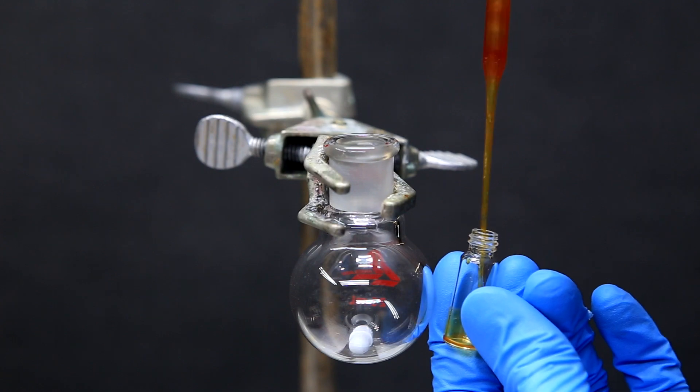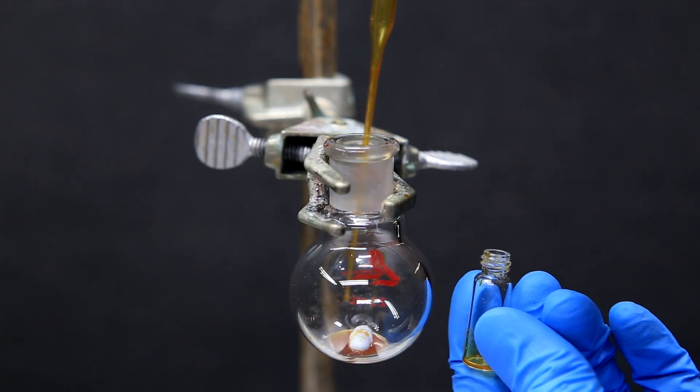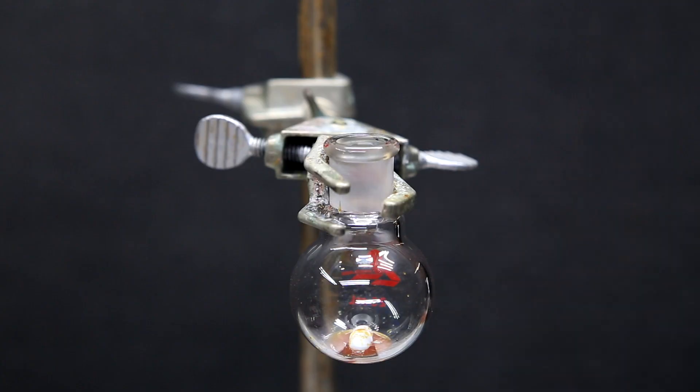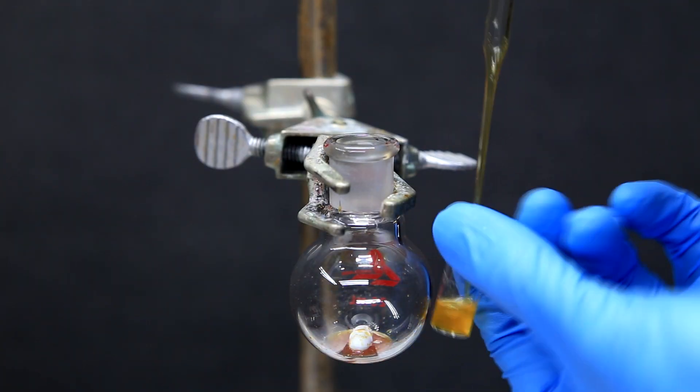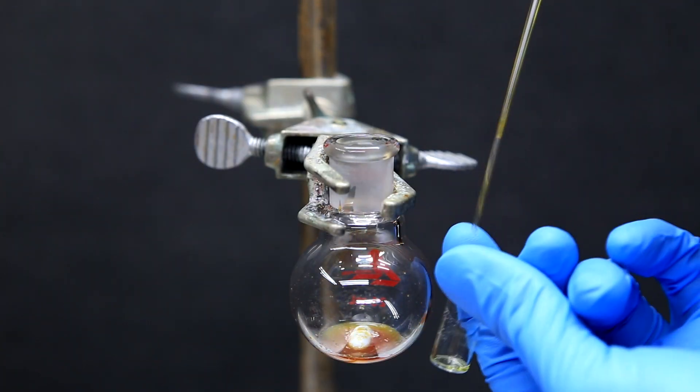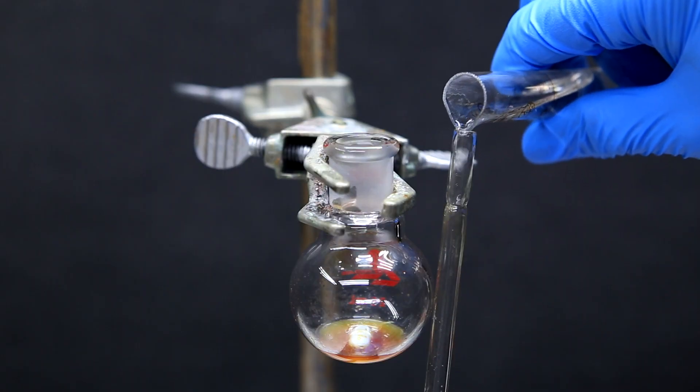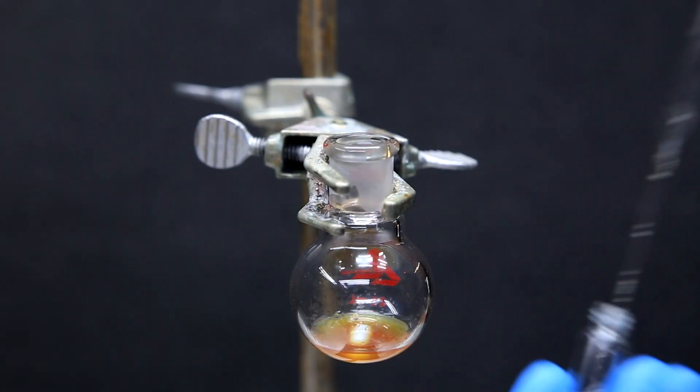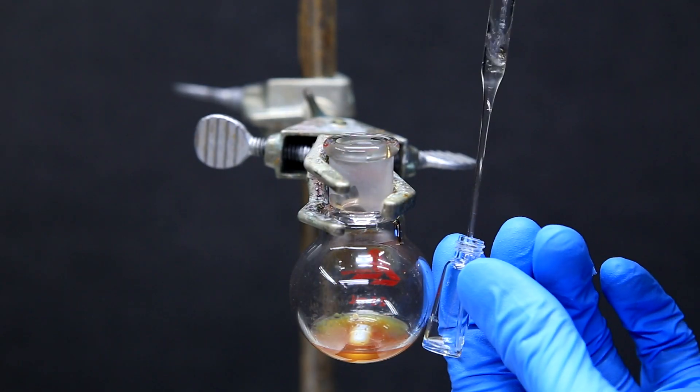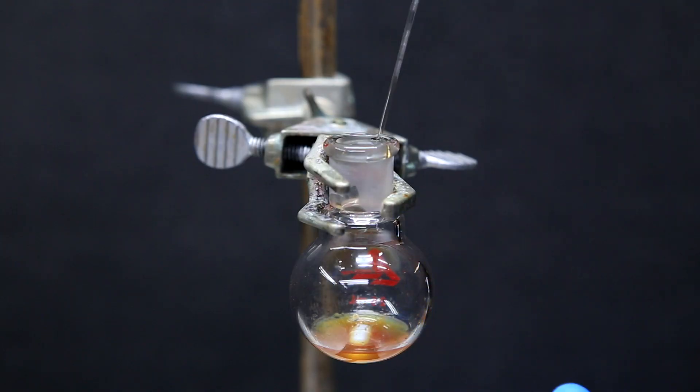So, to start, to a small round bottom flask, I pipette in the phenylhydrazine. To make sure that everything is transferred, the small vial and the pipette are washed several times with small amounts of ethanol. After several washings with the ethanol, the pipette and the vial should be cleaned, and we can move on to adding the propionaldehyde.